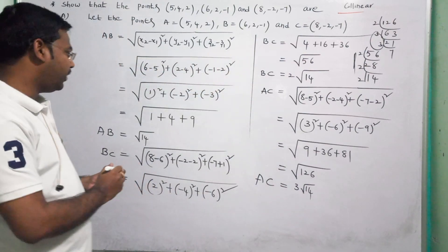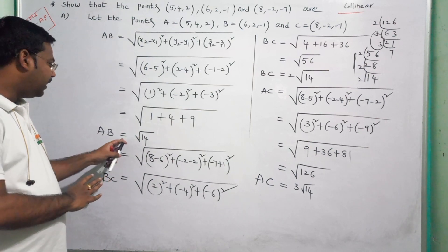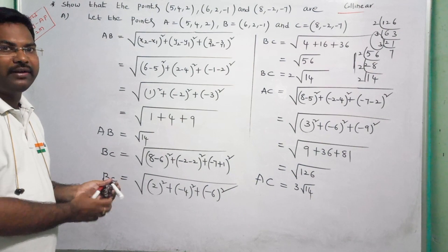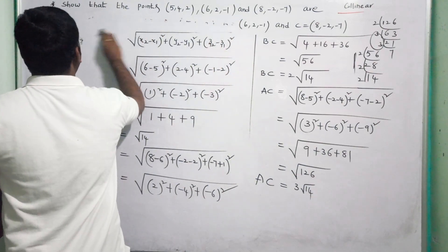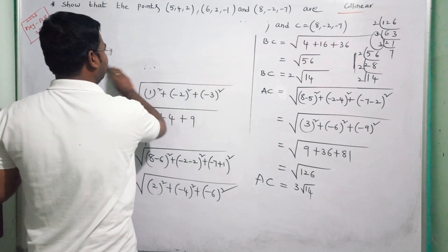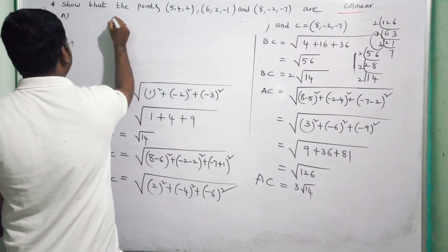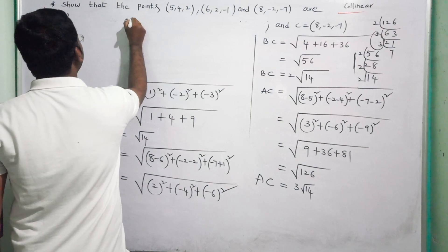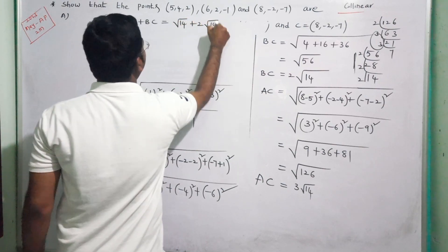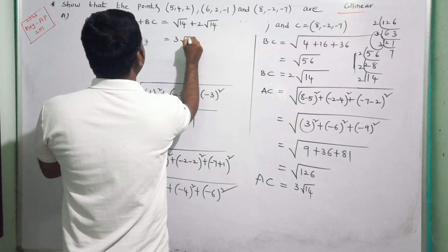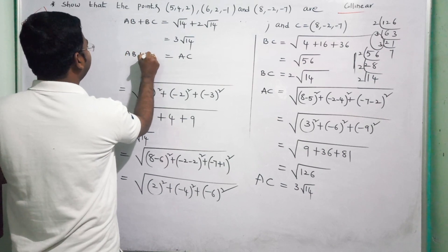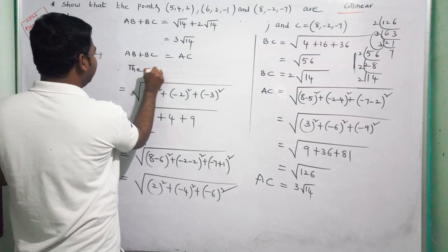You can observe that AC is the highest distance, equal to 3 root 14. AB plus BC equals root 14 plus 2 root 14 equals 3 root 14, which equals AC. Therefore, the given points A, B, C are collinear. Thanks for watching the video — please share with your friends.